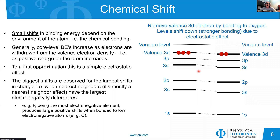As a rule, the biggest shift is usually observed when we have participation between two neighbors with the largest electronegativity difference. For example, fluorine, which is the most electronegative element, will produce the largest shift when bonded to low-electronegative elements such as carbon.